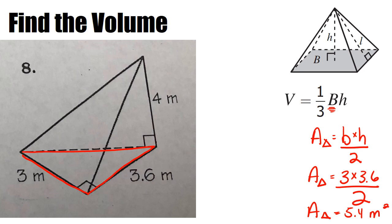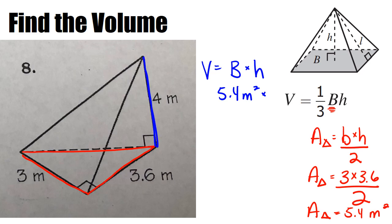And that's what we're going to use in our volume equation. For the volume equation, we're going to do base times height first. We know that the base is 5.4 meters squared, and we're going to multiply that by the height, which is 4 meters. In the calculator, 5.4 times 4 gives me 21.6 meters cubed.